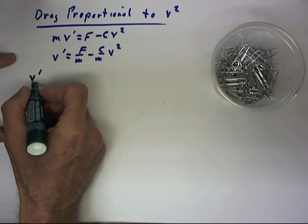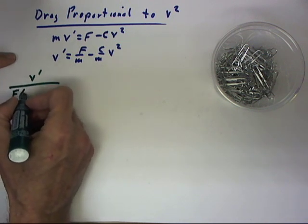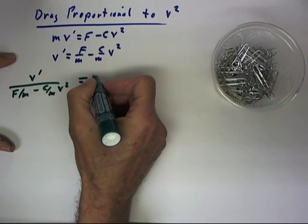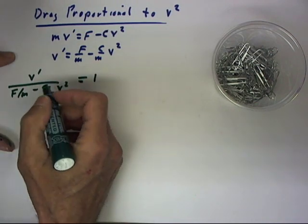v' divided by f/m minus c/m v² equals... well, I really shouldn't have put v' in there, equals 1.